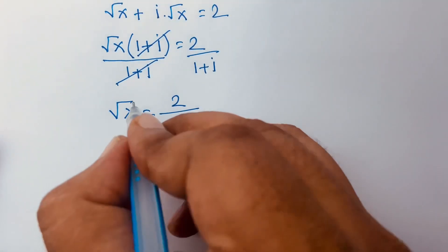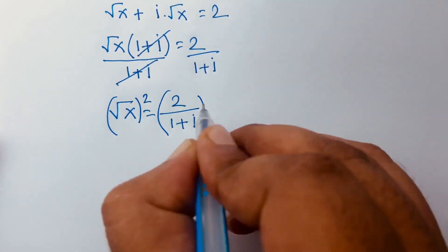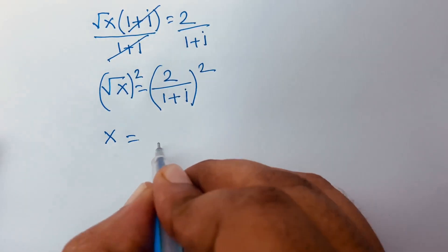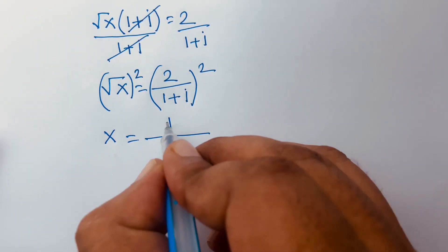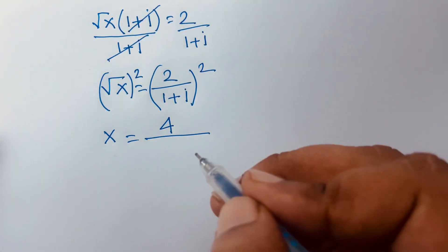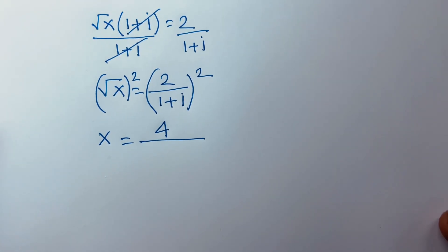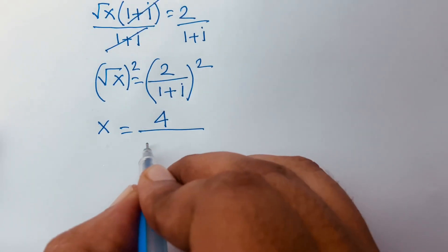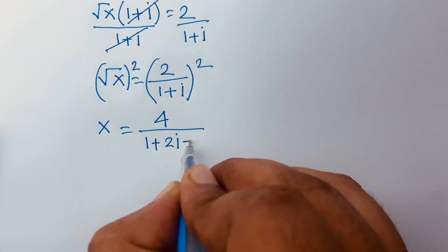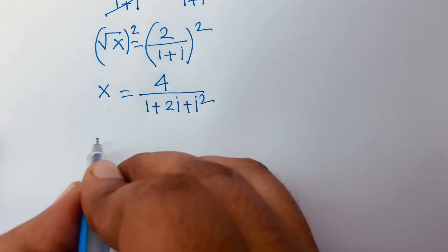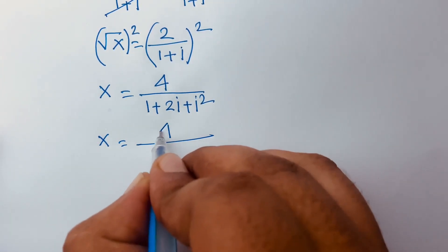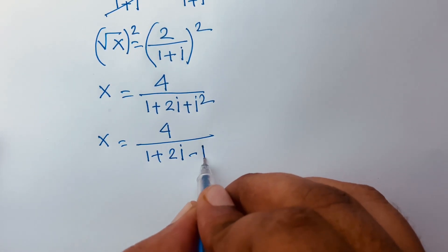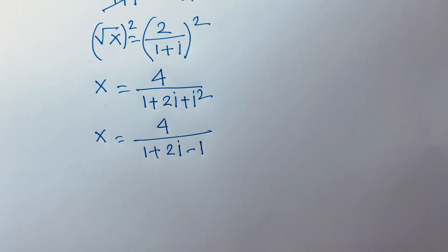Squaring both sides, the square root cancels and we get x is equal to 4 over (1 plus i) squared. Expanding using (a plus b)² = a² + 2ab + b², we get 1 plus 2i plus i², and since i² equals minus 1, the denominator becomes 1 plus 2i minus 1, which simplifies to 2i. So x equals 4 over 2i.